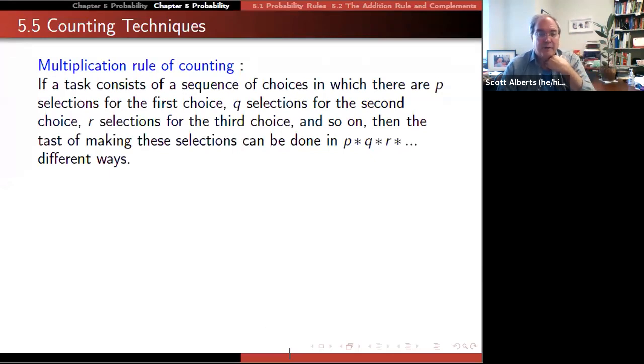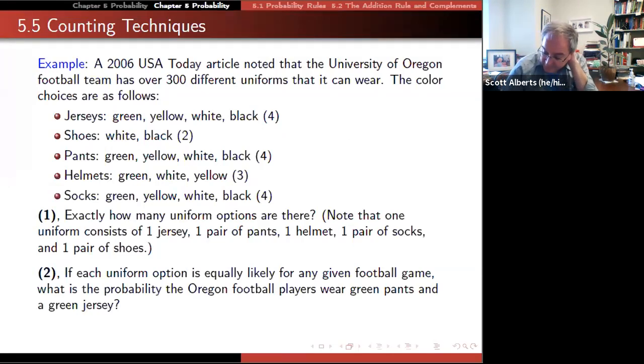Here's an example. This is from Dr. Love again. If the University of Oregon has four jerseys, two shoes, four pants, three helmets, and four socks, how many different uniform options are there, assuming that you wear one jersey, one shoe, one pant, one helmet, one sock? Then if each one is equally likely, what's the probability that the football players wear green pants and a green jersey?